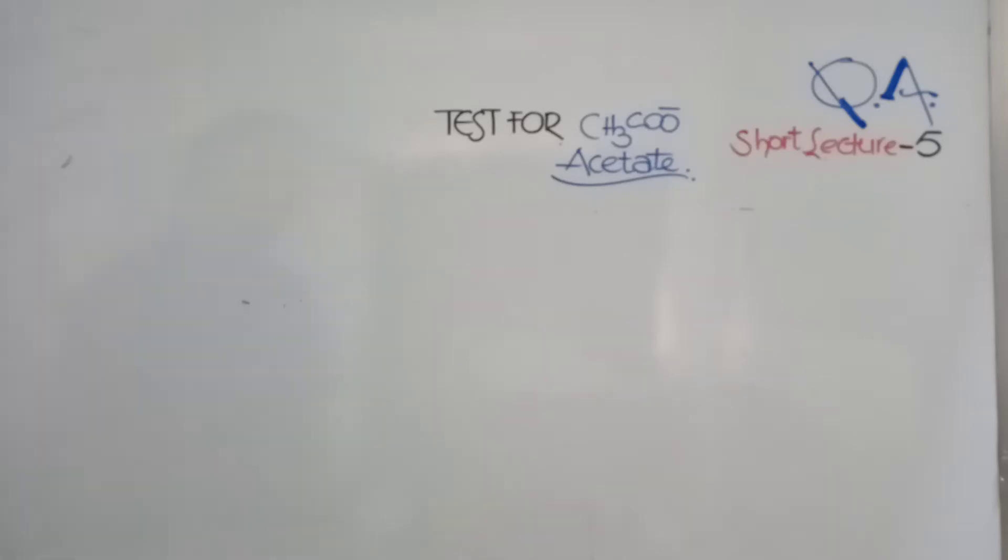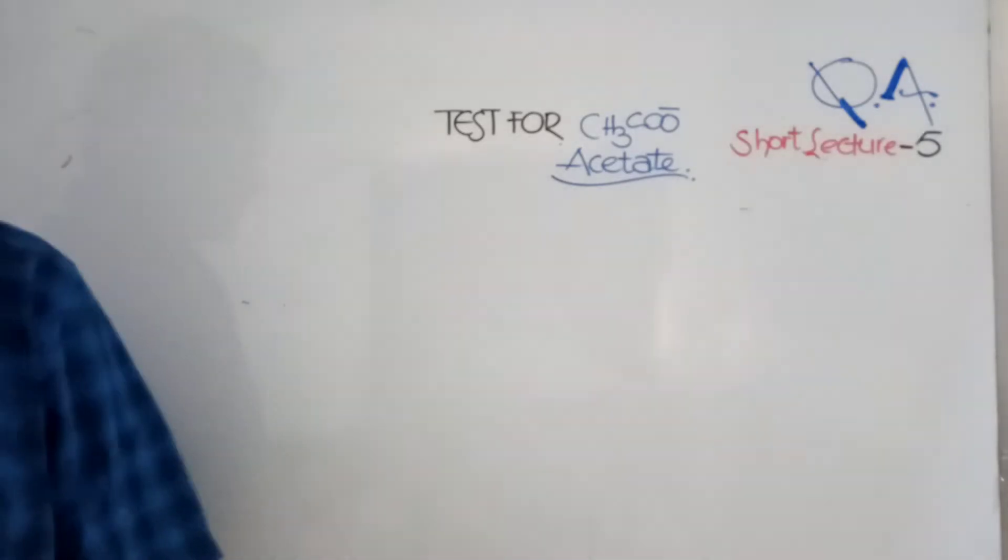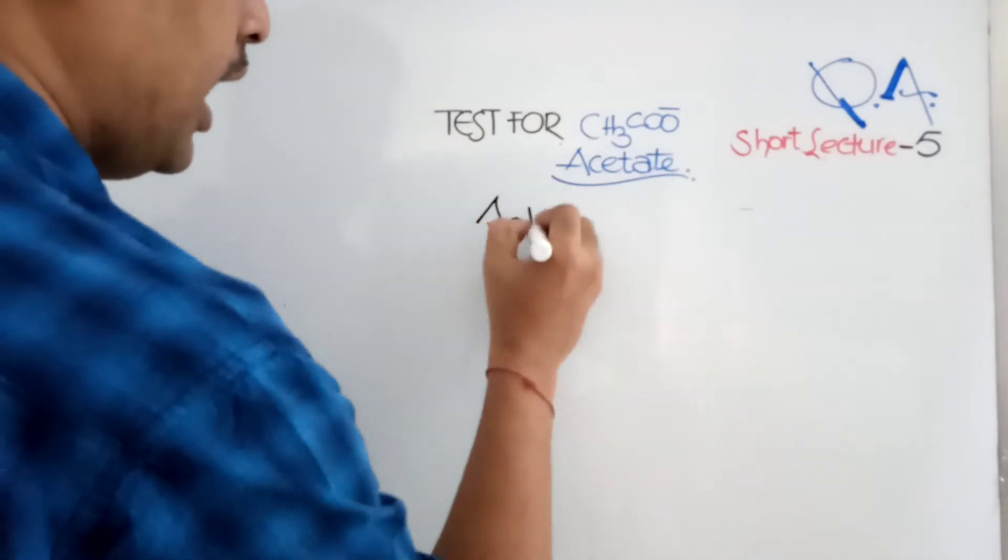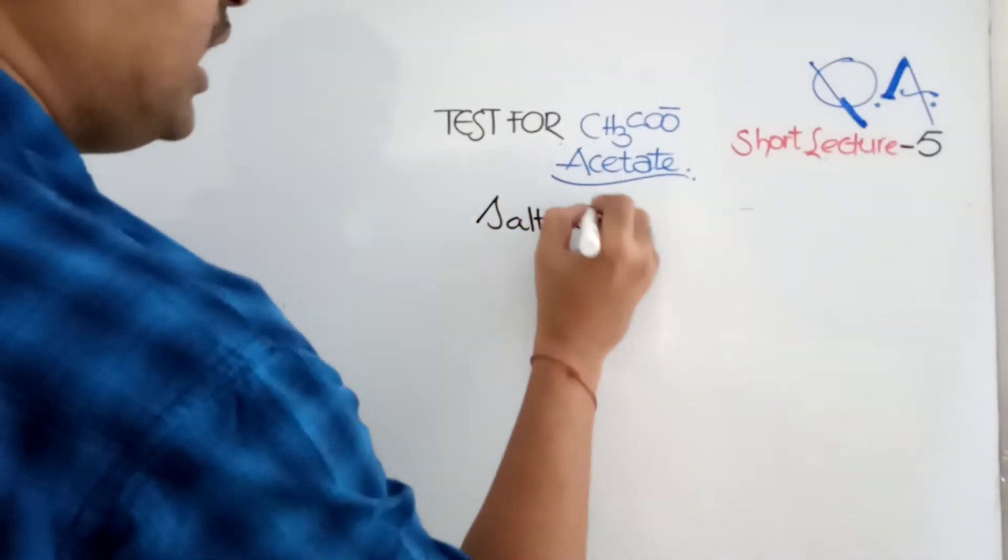Hello. Qualitative Analysis Short Lecture 5: Test for Acetate. It's very simple. Take salt and add dilute acid.